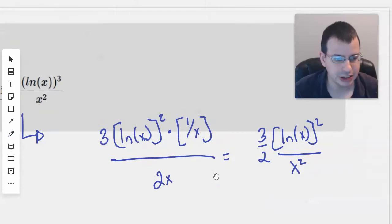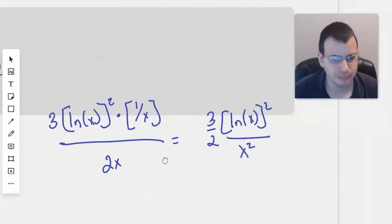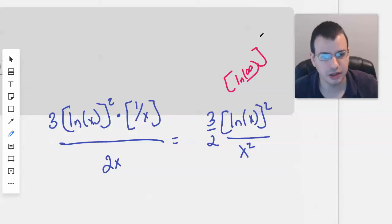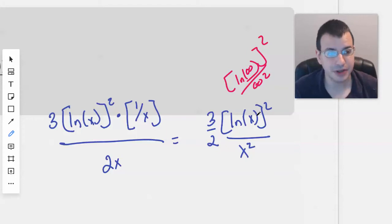Now when we plug in infinity, we still have natural log of infinity squared over infinity squared, which doesn't really help us out. But the natural log got a little bit smaller. So let's just do L'Hopital's rule again.